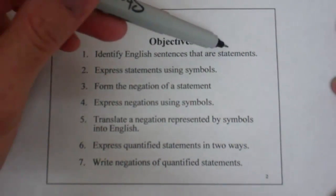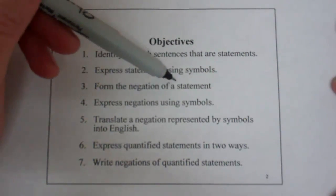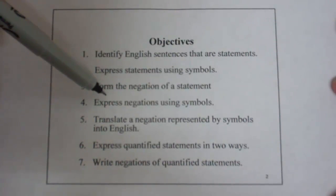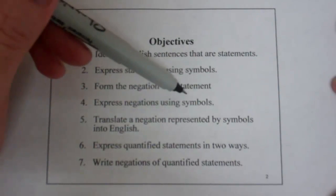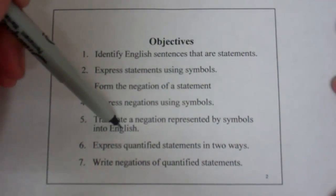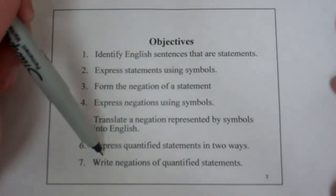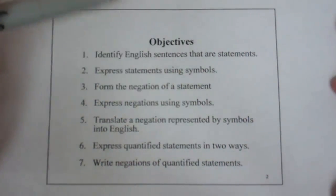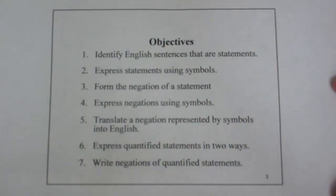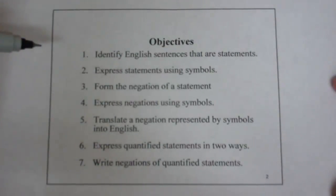We want to identify English sentences that are statements, express statements using symbols, form the negation of a statement — changing it from true to false or from false to true — express negations using symbols, translate a negation represented by symbols into English, express quantified statements in two ways, and write negations of quantified statements. Each one of these pieces is pretty straightforward, so let's get started.